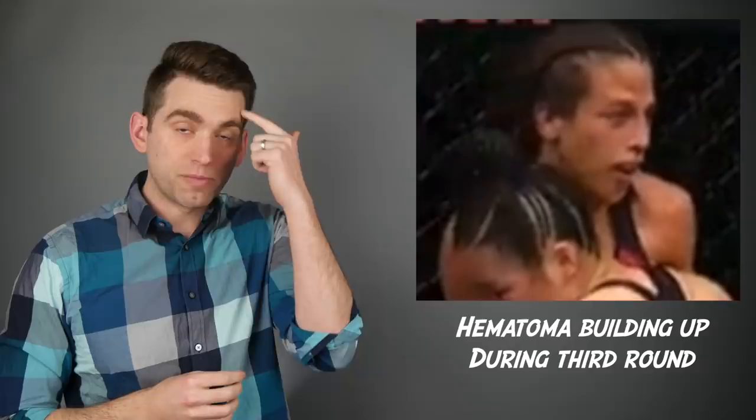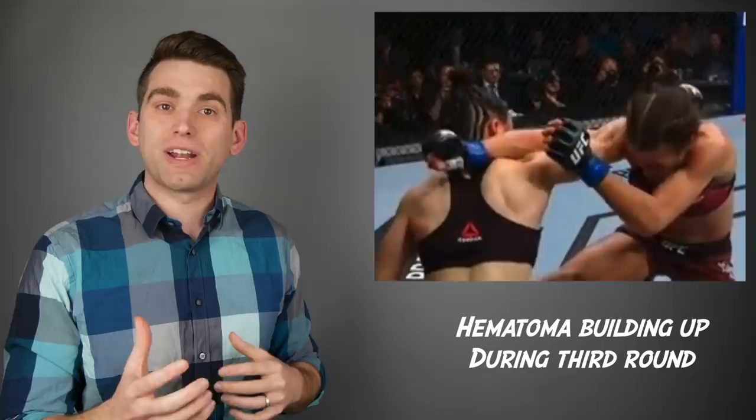Now, I think it was here in the third round where we could start to see a little bit of an outline of a hematoma start to form on Ioana's forehead. This was actually before the big punch where Joe Rogan said that's where it happened.